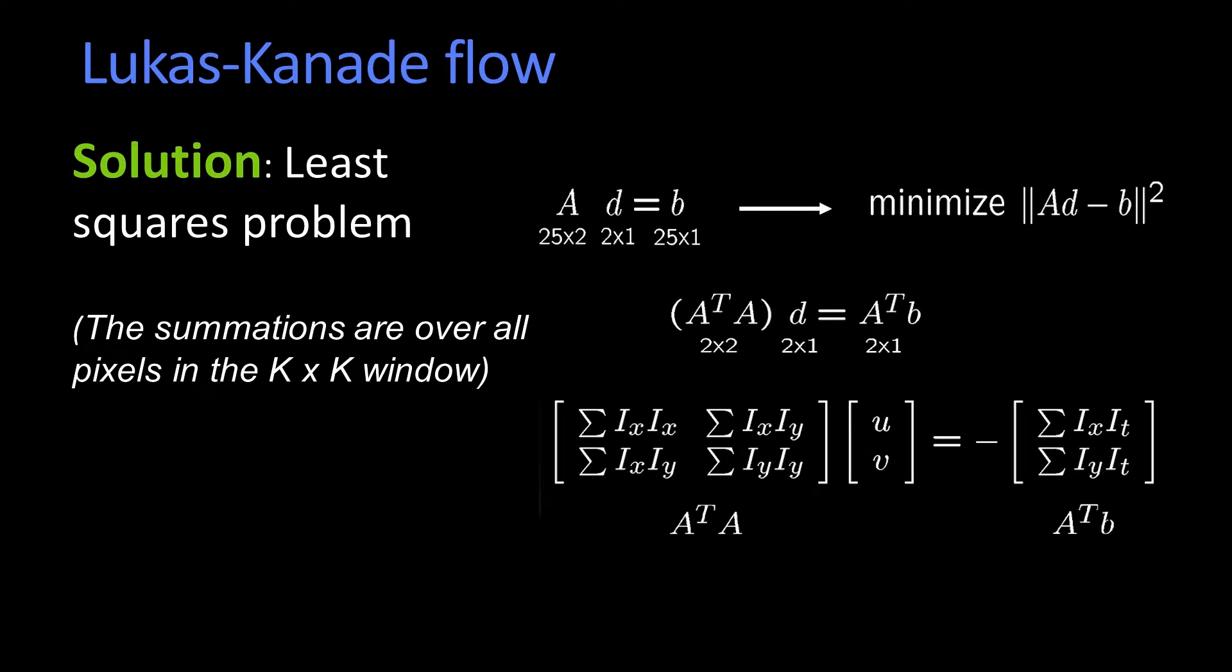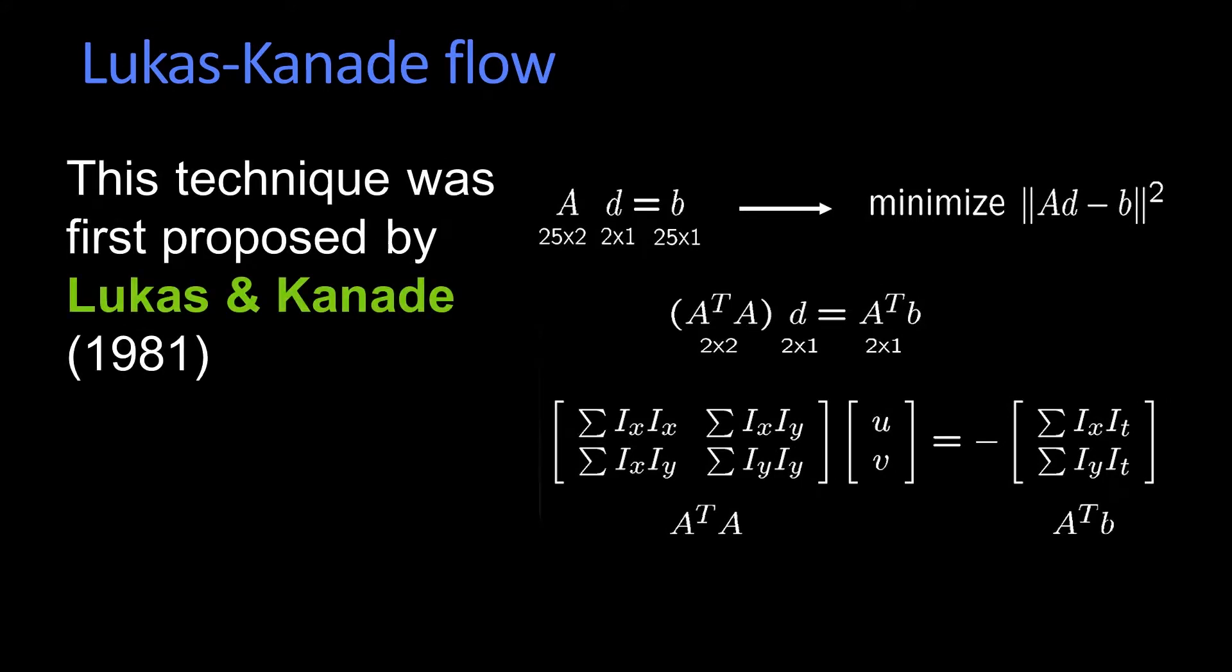And we related that to the whole Harris Corners, where we said that if the matrix here, A transpose A, if that matrix was well conditioned, meant we had two decent sized eigenvalues, it meant that the gradient occurred in various directions over that window.